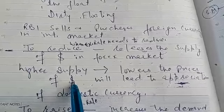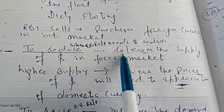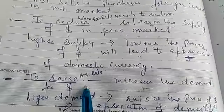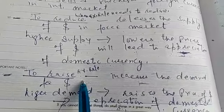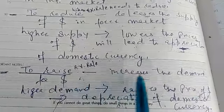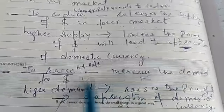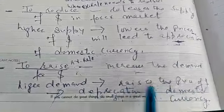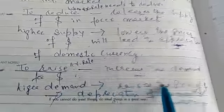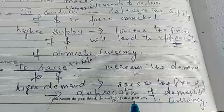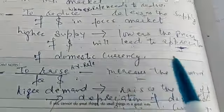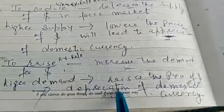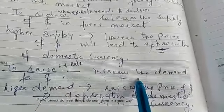When this happens, appreciation of domestic currency occurs. So for appreciation, the central bank releases the supply of dollars in the foreign exchange market to increase supply. On the contrary, if the central bank wants to raise the exchange rate, it starts purchasing dollars — demand is generated and increases. Higher demand means higher price, increasing the price of the dollar, causing depreciation of the domestic currency. To appreciate, supply is increased; to depreciate, demand for the dollar is increased.